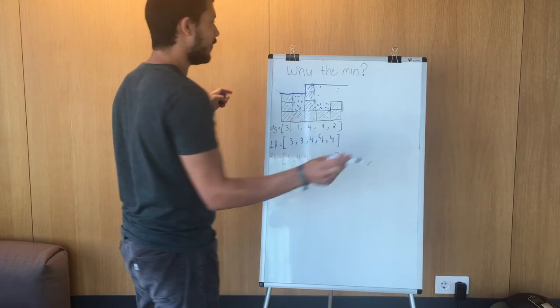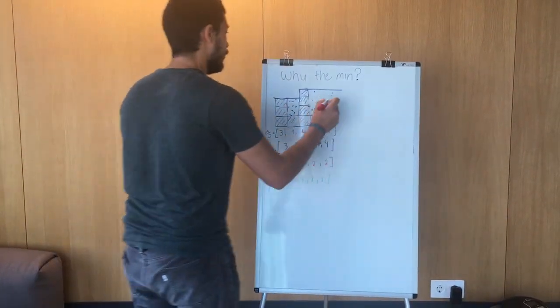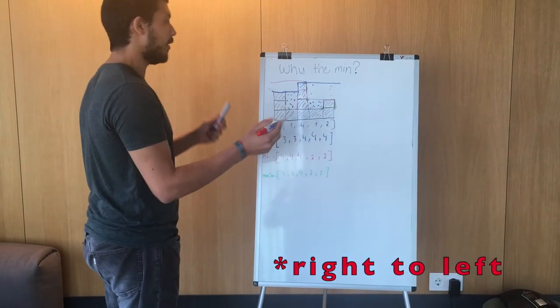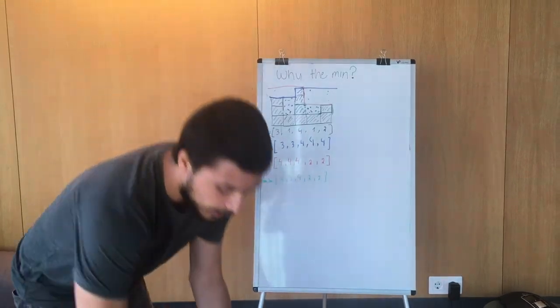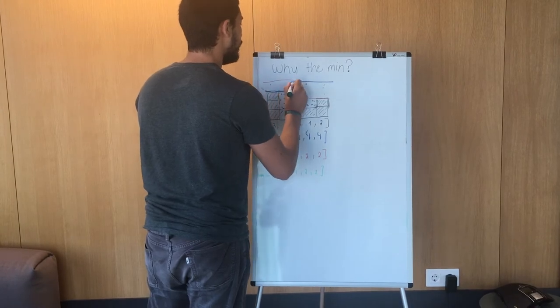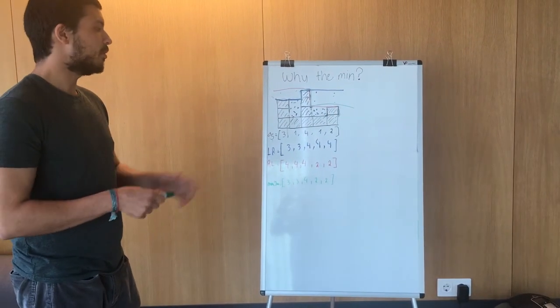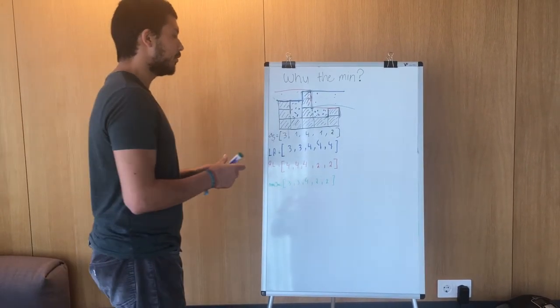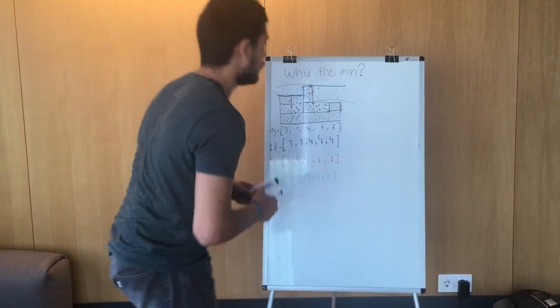And the same for the red one. For the left to right one, which is the red one, we'd get also here two blocks of air that we don't need. But with the minimum, we end up with the exact configuration that we need to subtract to the original in order to get our volume of water which, in this case, is 4.